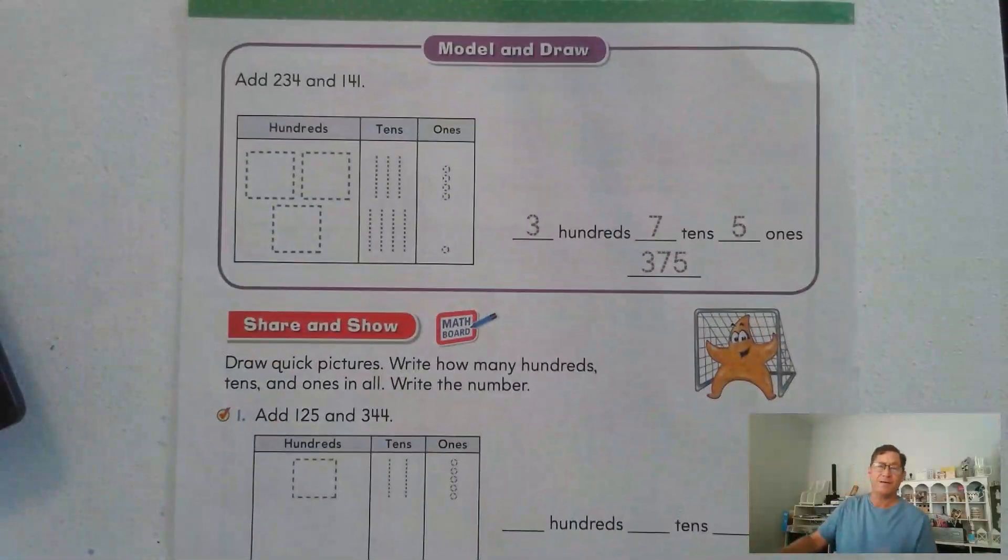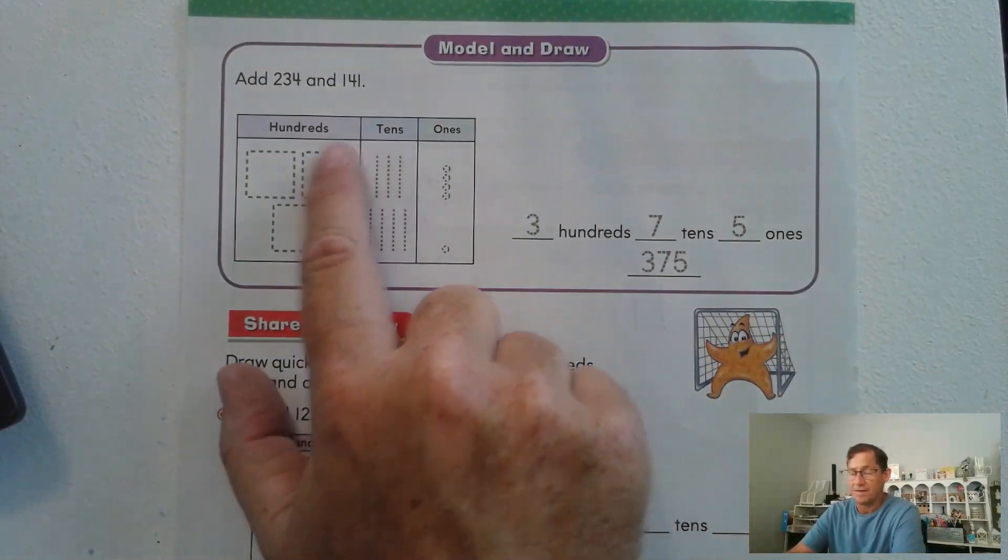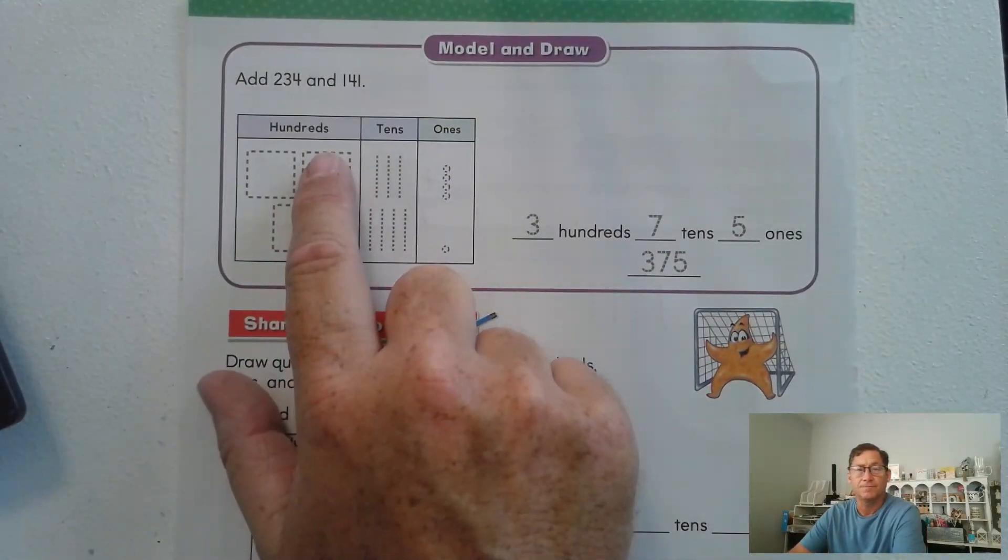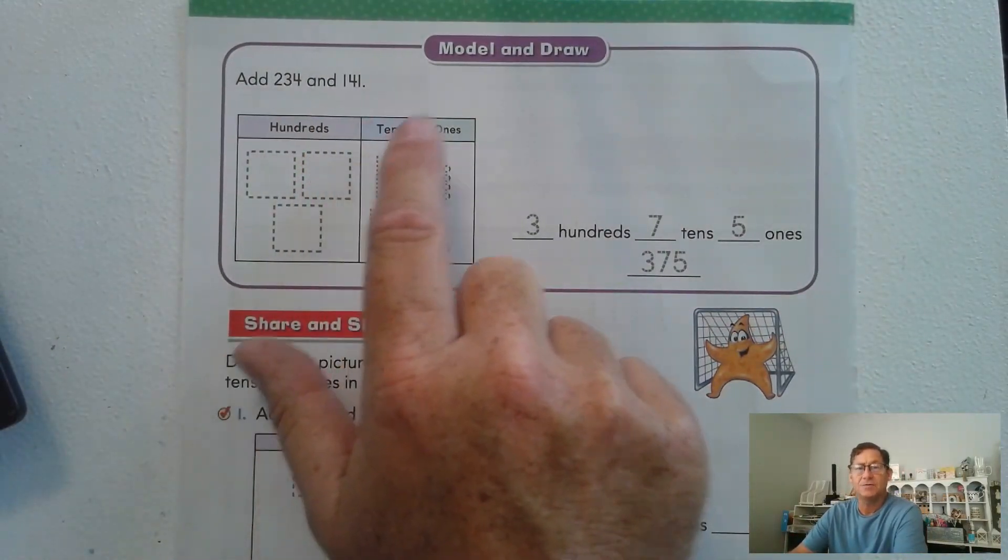So let's look at page 282. So what's it look like when we have three digits? Well, now you notice we have a third place value column. Hundreds, tens, ones.